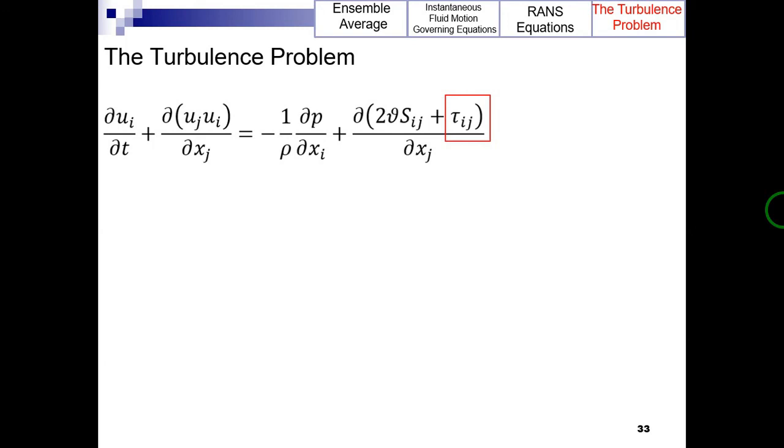This means that the closure ideas which work so well for the viscous stress should not be expected to work too well for the Reynolds stress, and as we shall see, they don't. This leaves us in a terrible position.